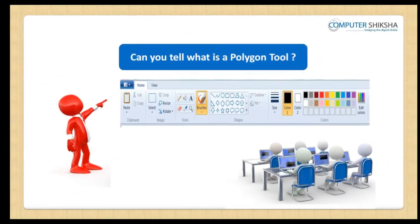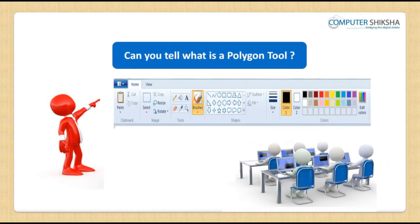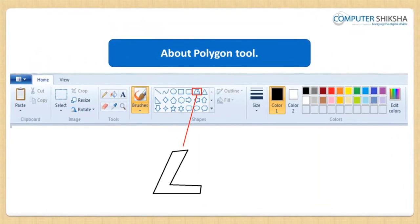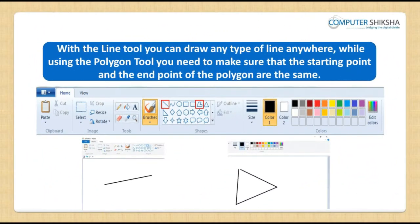Can you all say what is a Polygon Tool? The Polygon Tool functions like the Line Tool, but while drawing with the Line Tool you can draw any type of line anywhere. While using the Polygon Tool, you need to make sure that the starting point and the end point of the polygon are the same.